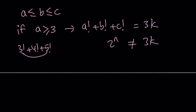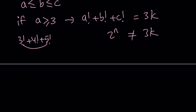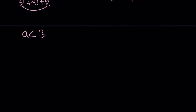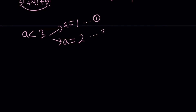So we have to assume that a is less than 3 — that's the only way to overcome this issue. That means a is either 1 or 2, since we're looking for positive integer solutions. Let's look at it case by case. The first case is a equals 1.